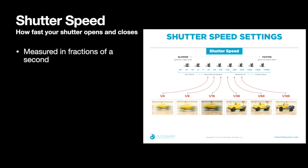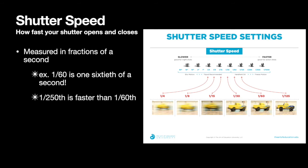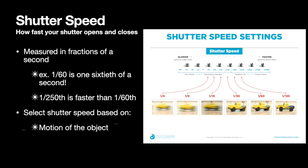Shutter speed is measured in fractions of a second. Yes, we're doing math and photography! For example, if my shutter speed is 1/60, that means it's one-sixtieth of a second. Look at the example images — if that little toy car was in motion at 1/60th of a second, the picture would be blurry. If I wanted it frozen, I need to increase the shutter speed. 1/250th of a second is faster than 1/60th — the higher the number, the faster the speed. You choose your shutter speed based on the motion of the object or the desired results, because sometimes we want that blurred effect.